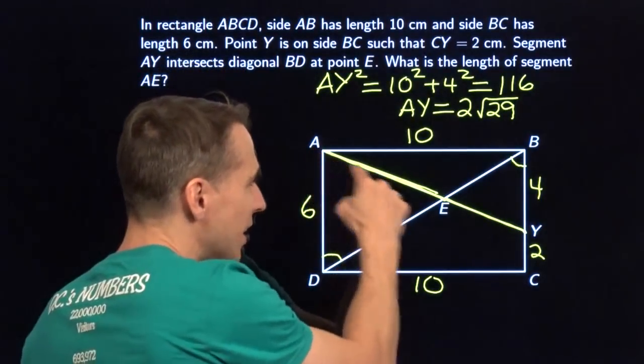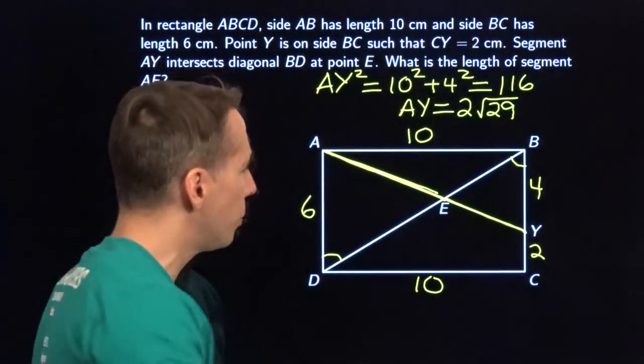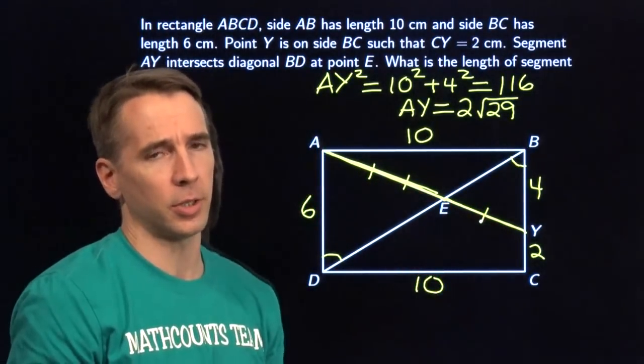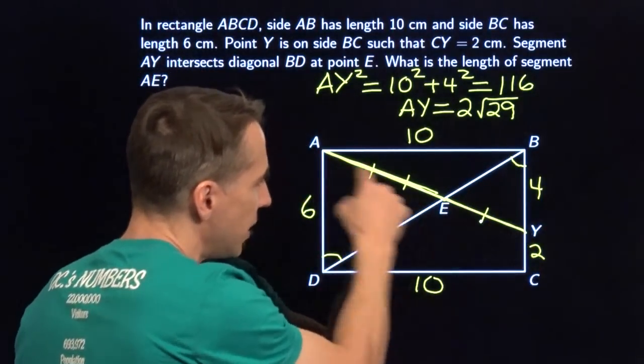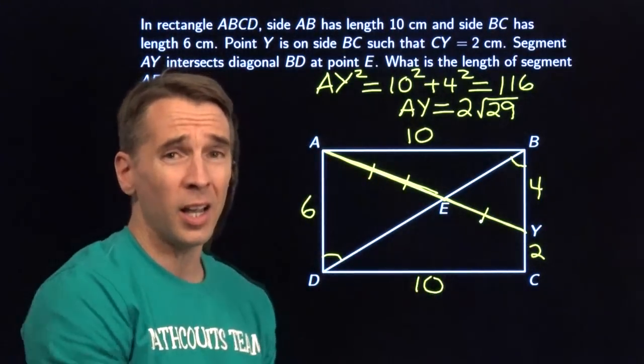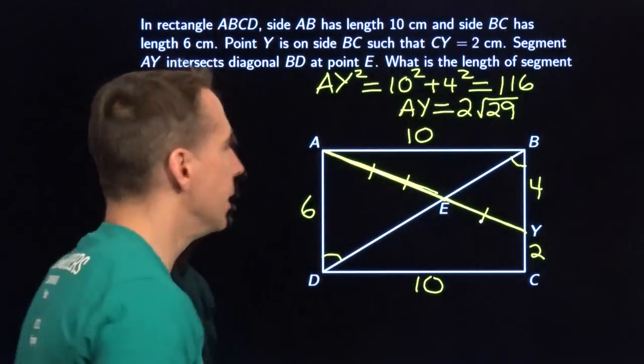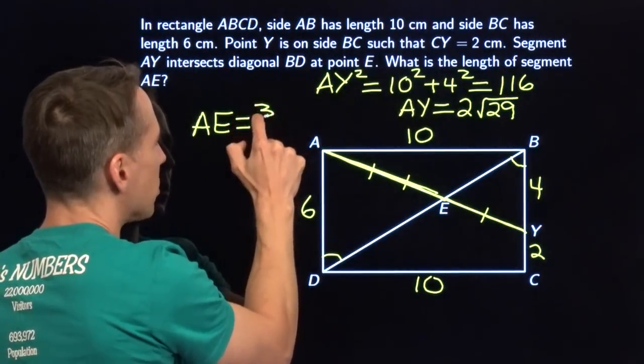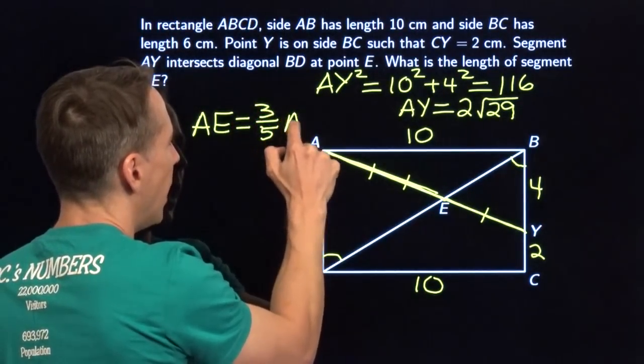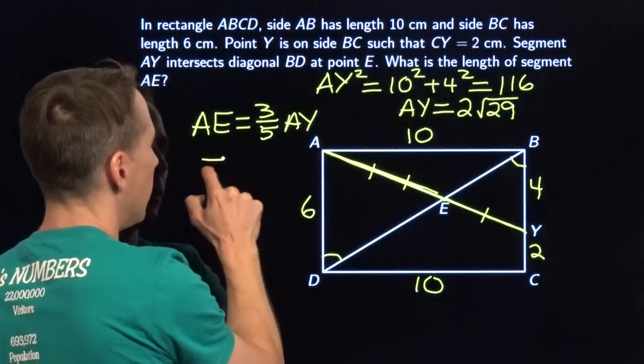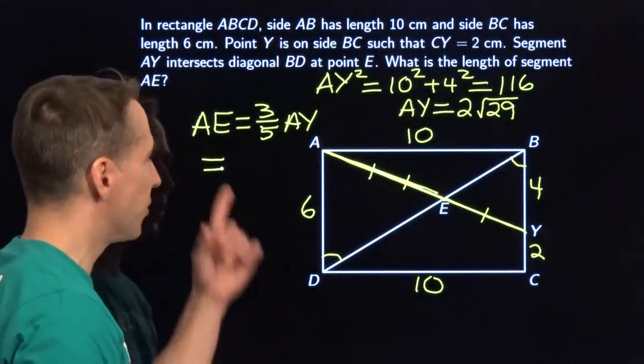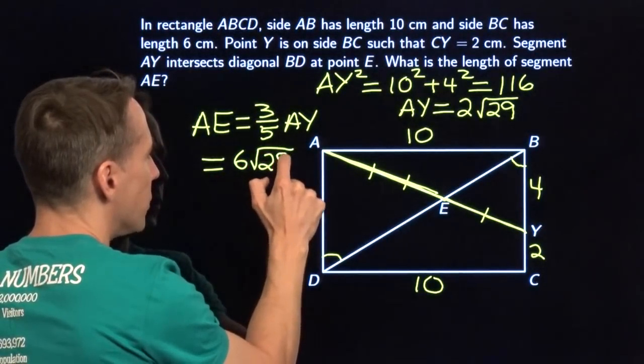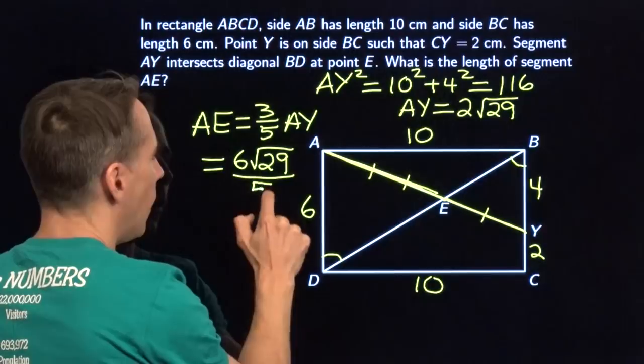So that means if we take this AY and we split it up into 5 equal pieces, three of those pieces are going to be over here and 2 of those pieces are going to be over there. So 3 fifths of the entire thing AY, 3 fifths of that is AE. AE is 3 fifths of AY. And we have AY right there. So we just take 3 fifths of that. 3 fifths of that gives us 6 times the square root of 29 all over 5.